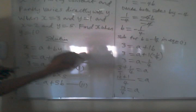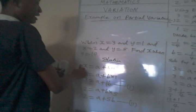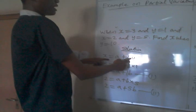Now we have a and b. From there we can get the formula connecting the values. Which means from our onset we have seen that x is equal to a plus by. Now we already have our a, we already have our b.